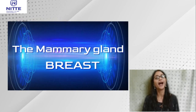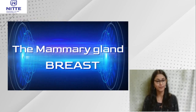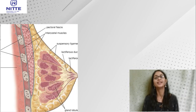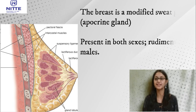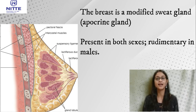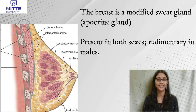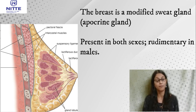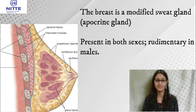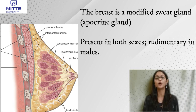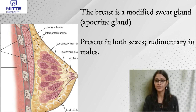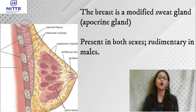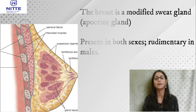In this video I am going to talk about the mammary gland or the breast. The breast is a modified sweat gland, which is an example of an apocrine gland. This is present in both sexes but it is rudimentary in males. It forms an important accessory organ of the female reproductive system which serves the function of nutrition to babies by breastfeeding.